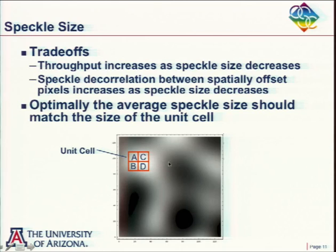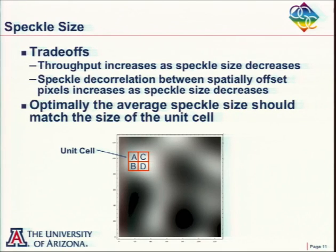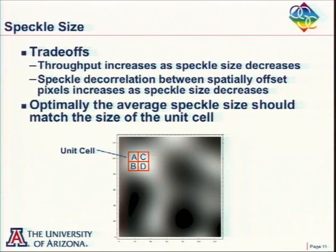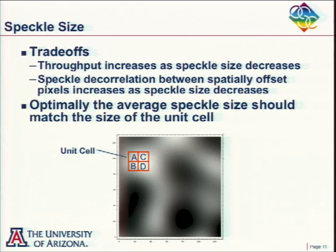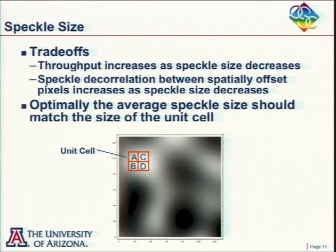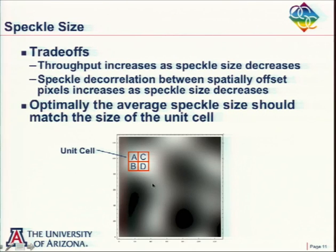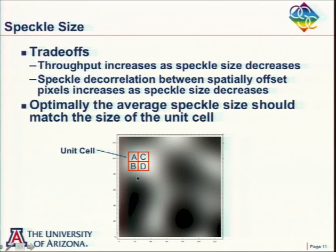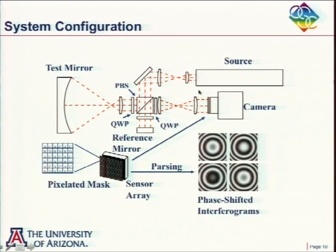How do we make the speckles large? We stop down the imaging lens. If you look at a speckle pattern and close down the aperture, you see the speckles get larger — the speckle size is on the order of the Airy disk of the lens. So if we want the speckles to be larger than the unit cell, we stop down the imaging lens in the system.